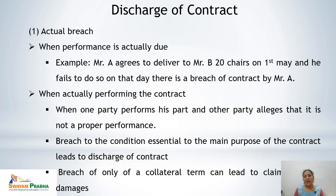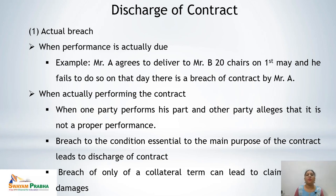In actual breach, when the actual performance was due and one party is not able to perform on that particular day, that is actual breach. Also during the performance, when one party cannot perform, that is actual breach. Where one party performs his part and the other party alleges it is not proper performance, a breach of a condition essential to the main purpose of the contract leads to discharge. However, breach of only a collateral term will not discharge the contract but will lead only to a claim for damages.